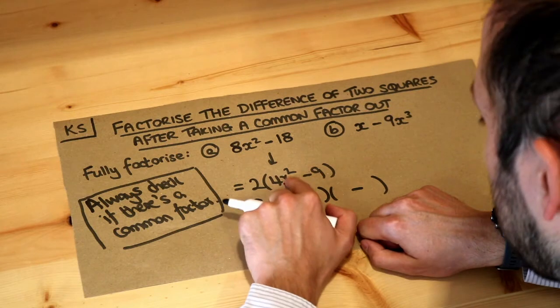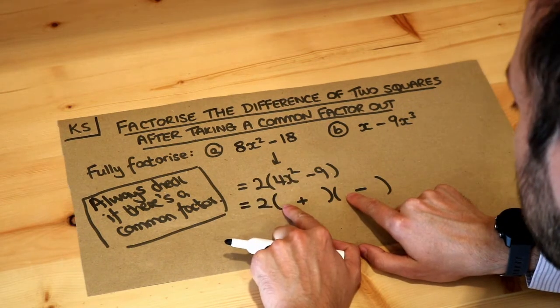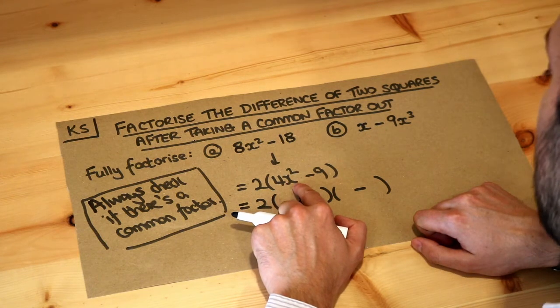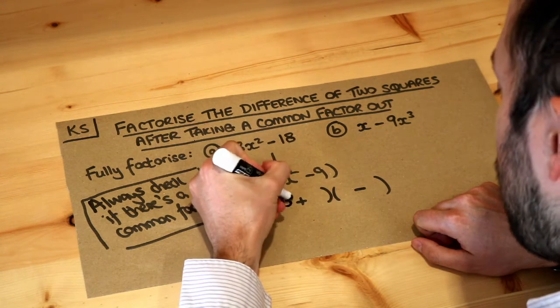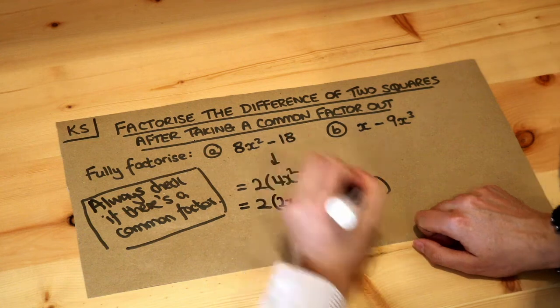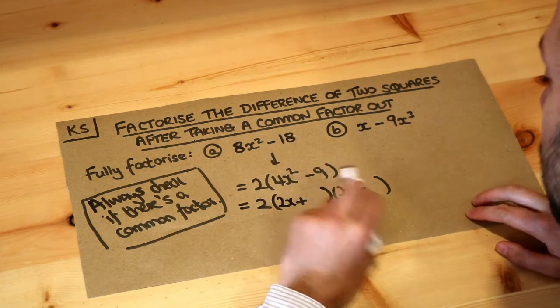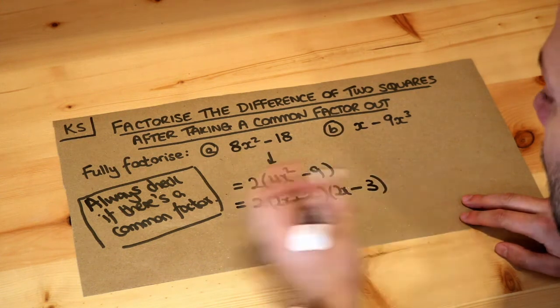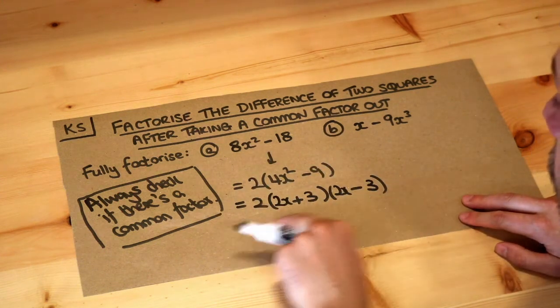And then we do the square root of each of the things. We do the square root of the first thing here and make it the first thing in these brackets. The square root of 4x². Well, the square root of 4 is 2, the square root of x² is x, so it's 2x because 2x times 2x is 4x². And what's the square root of 9? Well it's 3, so we put the 3 there. And that is the final full factorisation.